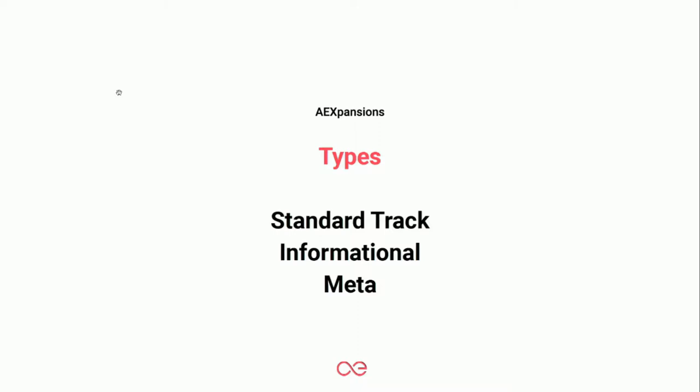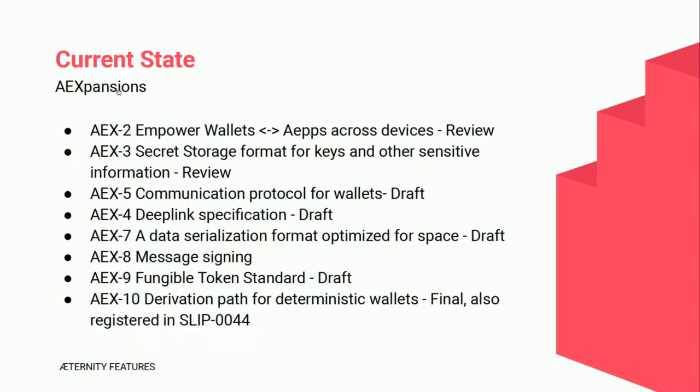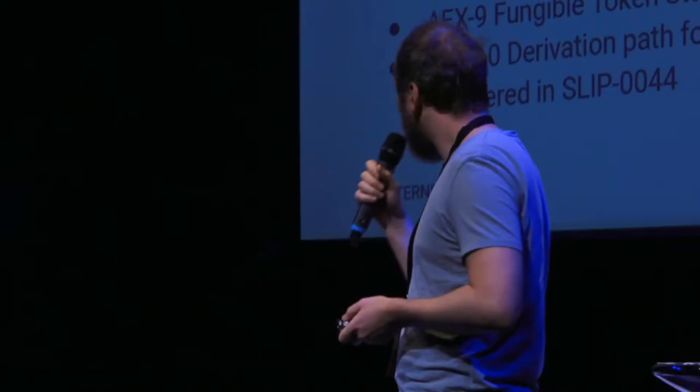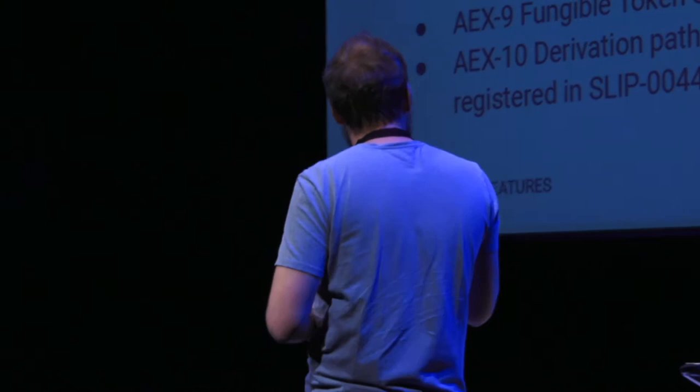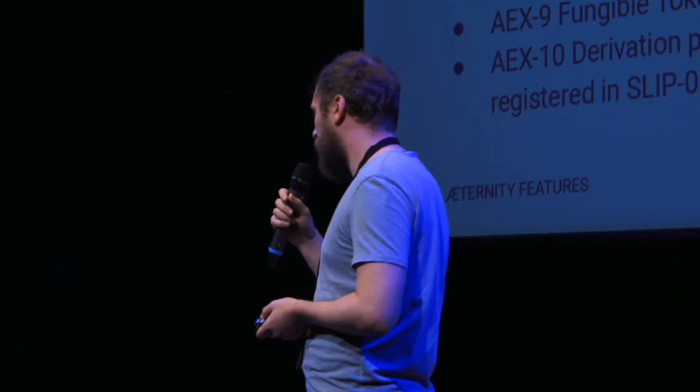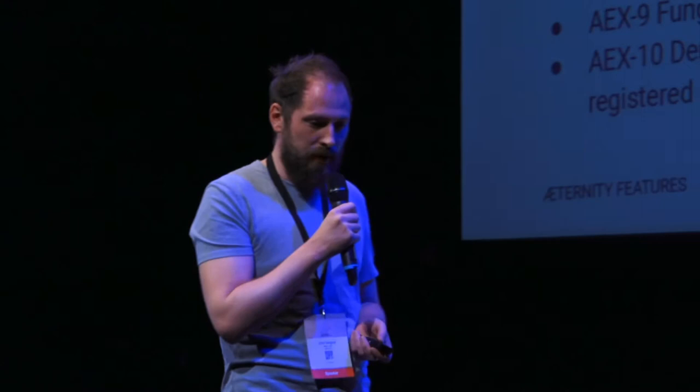So what do we have already? We have Expansion 2, which defines the standard for how wallets and apps communicate with each other. Everybody is able to build a wallet, and as long as it is in line with the standard, all apps that are also in line with the standard will work with that wallet — quite a crucial one. Then we have the secret storage format, which is basically a format for when you, as a user, want to migrate from one wallet to another, so you can migrate your keys and secrets.